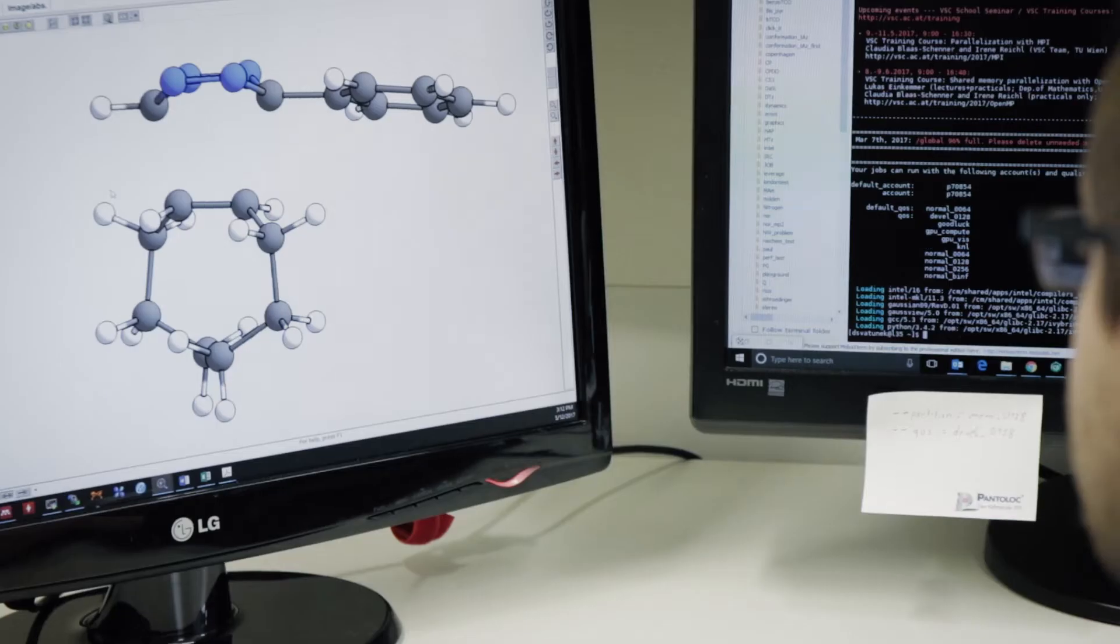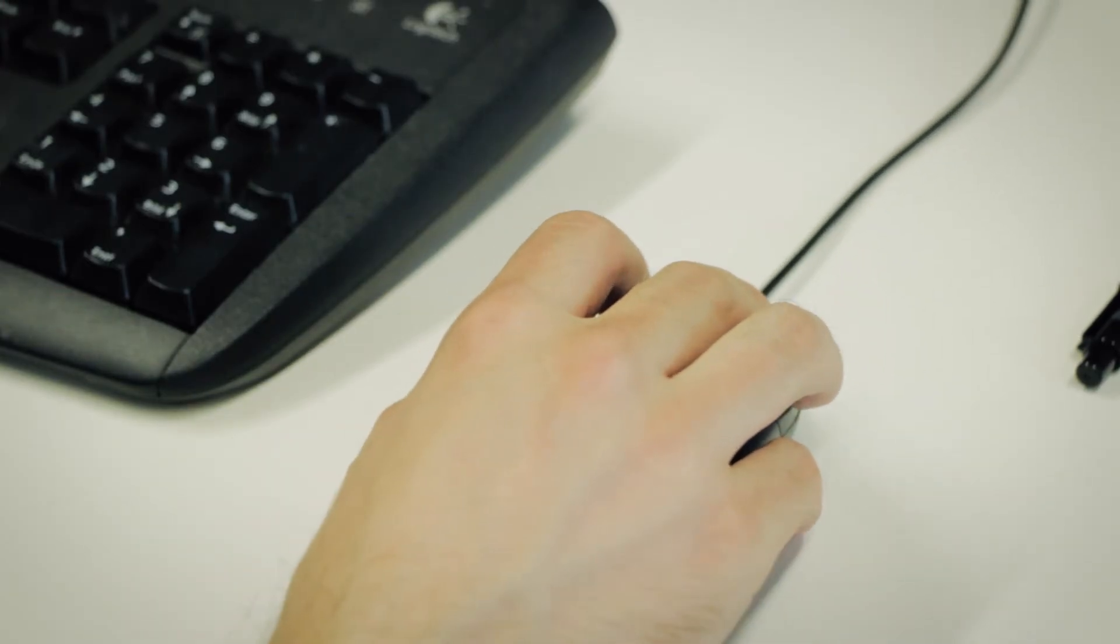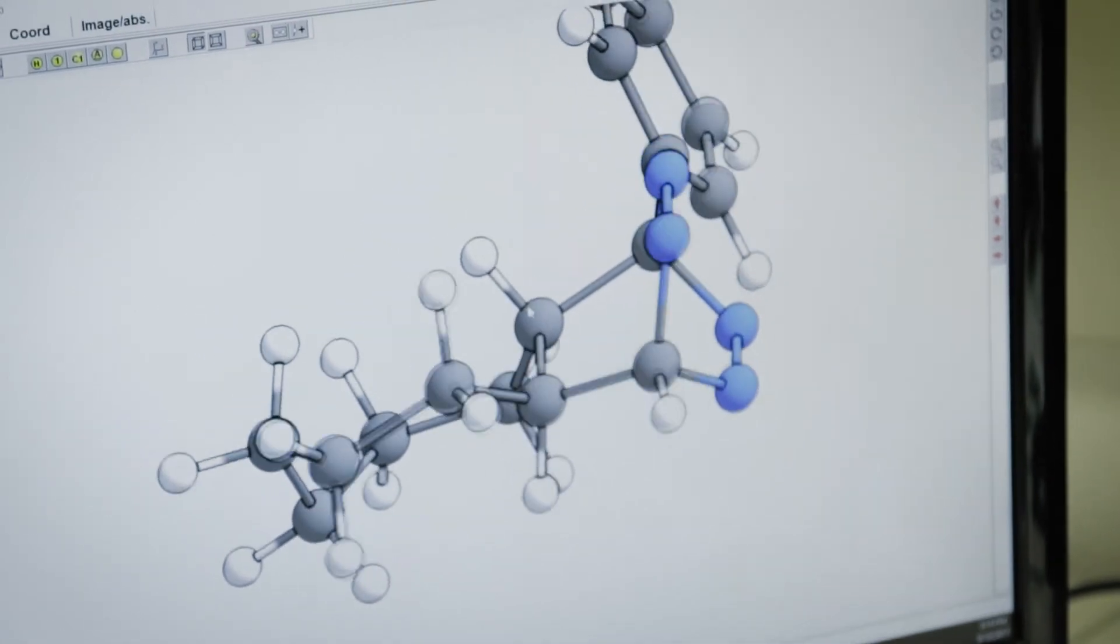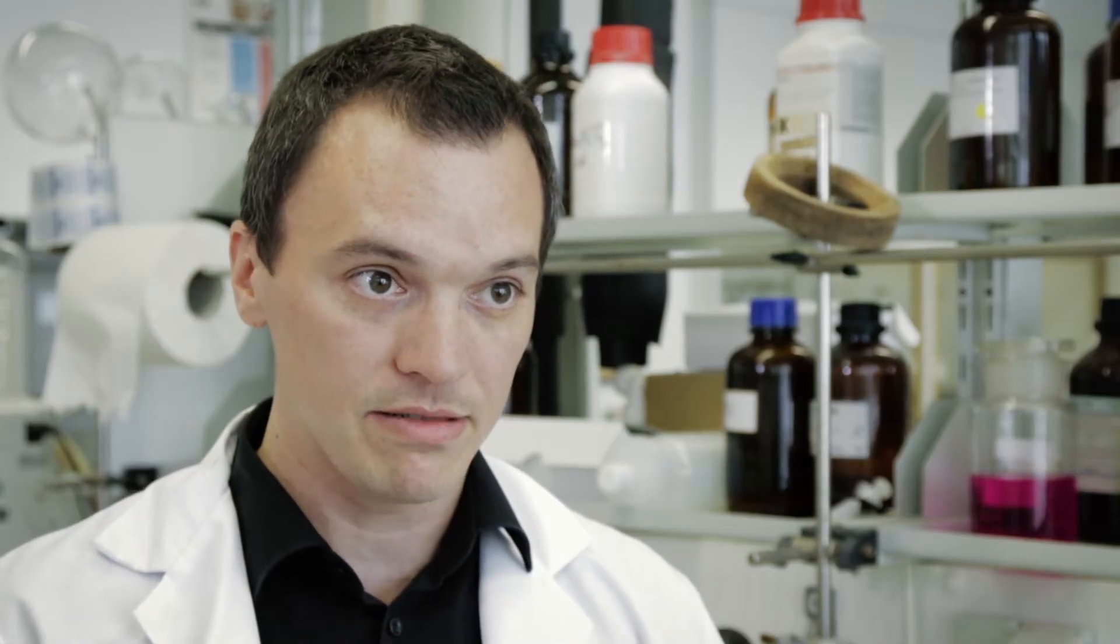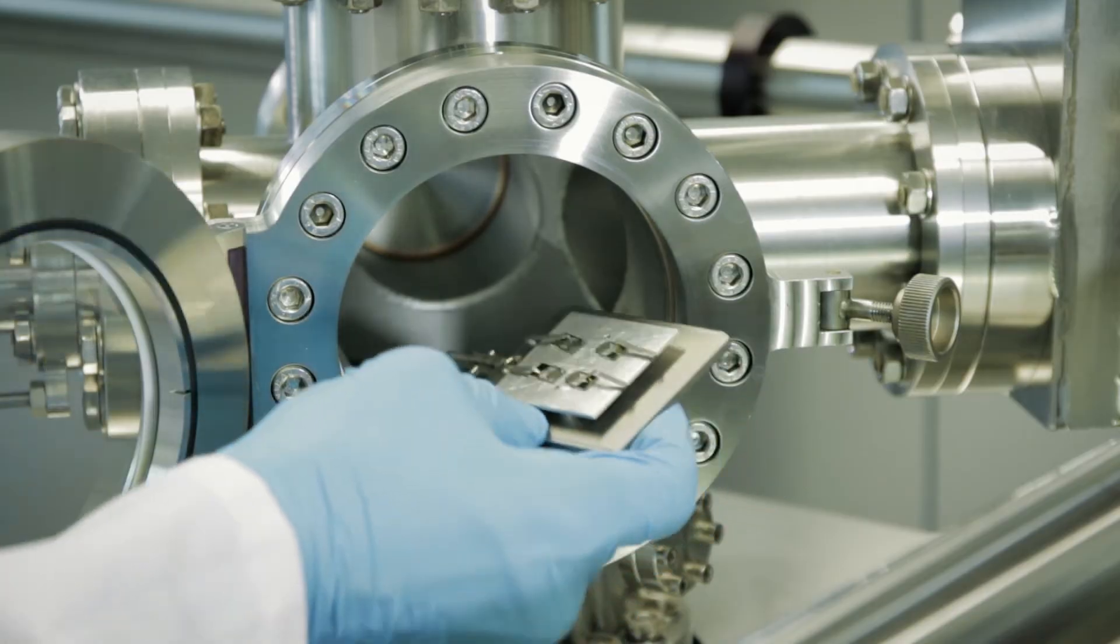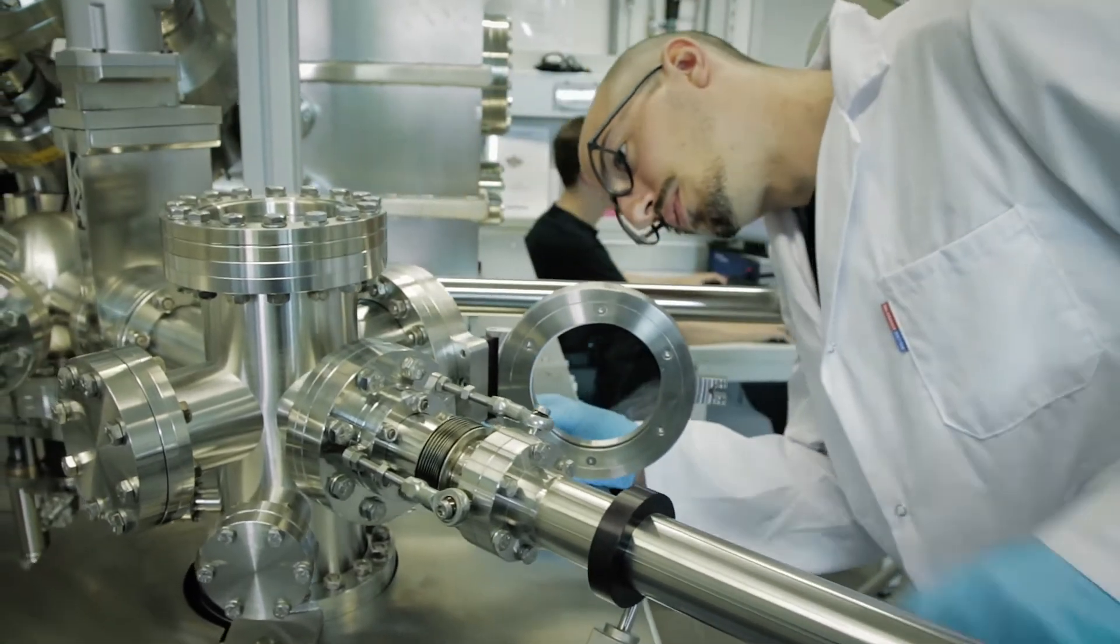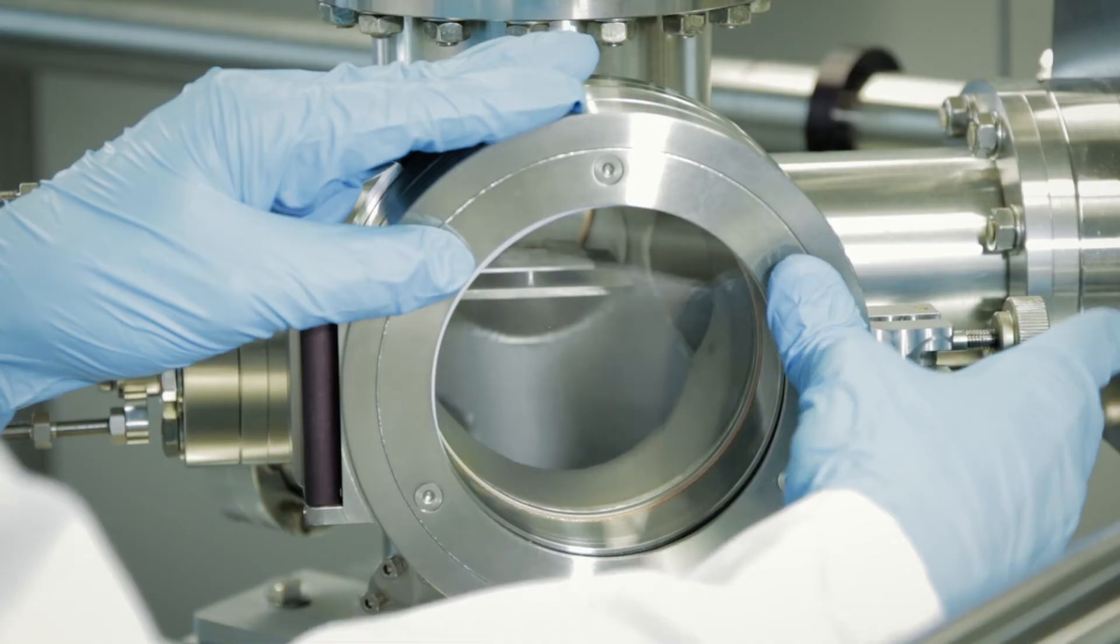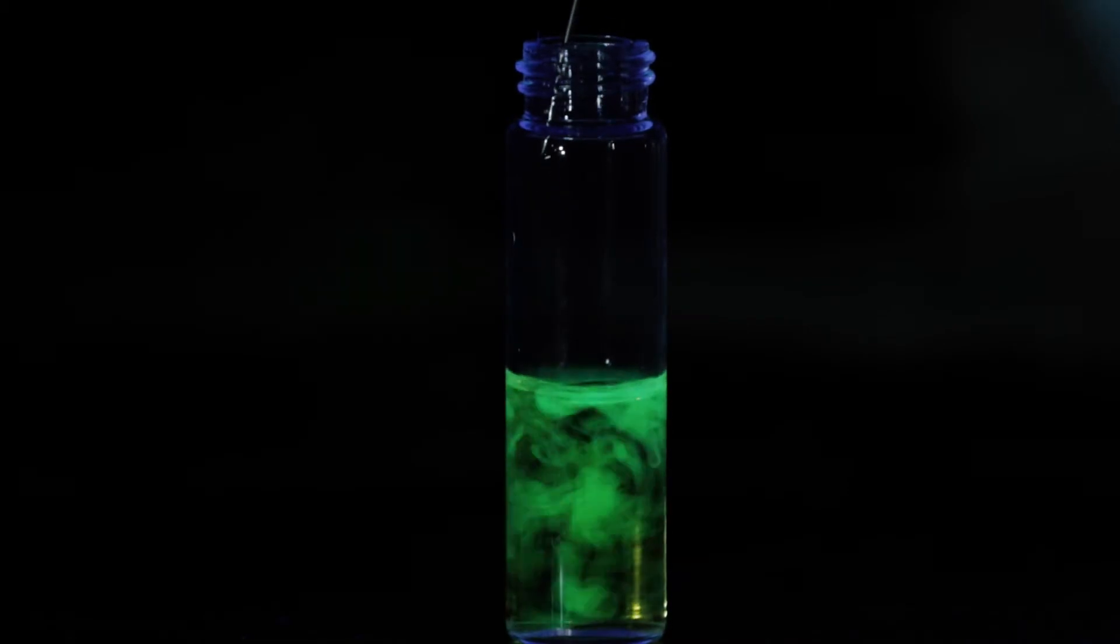To understand and also to develop new bio orthogonal tools, we start by investigating those click reactions using computational methods. Based on these results, we select the most promising bio orthogonal reagents which will then be prepared here in the lab. After that, to finally investigate parameters such as selectivity, stability, and reactivity, we use optical methods such as fluorescence measurements and spectroscopy.